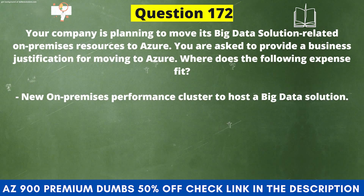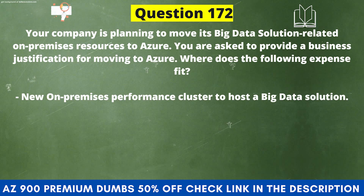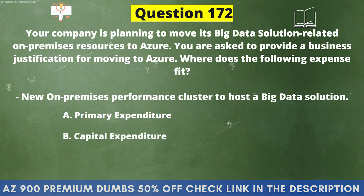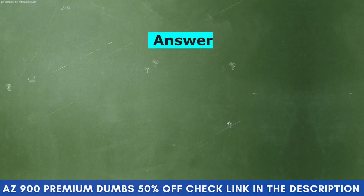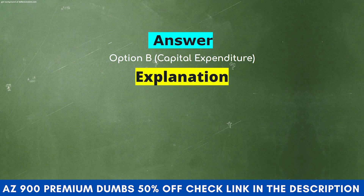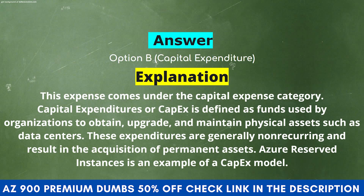Your company is planning to move its big data solution from on-premises to Azure. You are asked to provide a business justification. Where does the following expense fit? New on-premises performance cluster to host a big data solution. Option A: Primary Expenditure. Option B: Capital Expenditure. Option C: Secondary Expenditure. Option D: Operating Expenditure. The correct answer is Option B, Capital Expenditure. CapEx is defined as funds used by organizations to obtain, upgrade, and maintain physical assets such as data centers. These expenditures are generally non-recurring and result in the acquisition of permanent assets. Azure Reserved Instances is an example of a CapEx model.